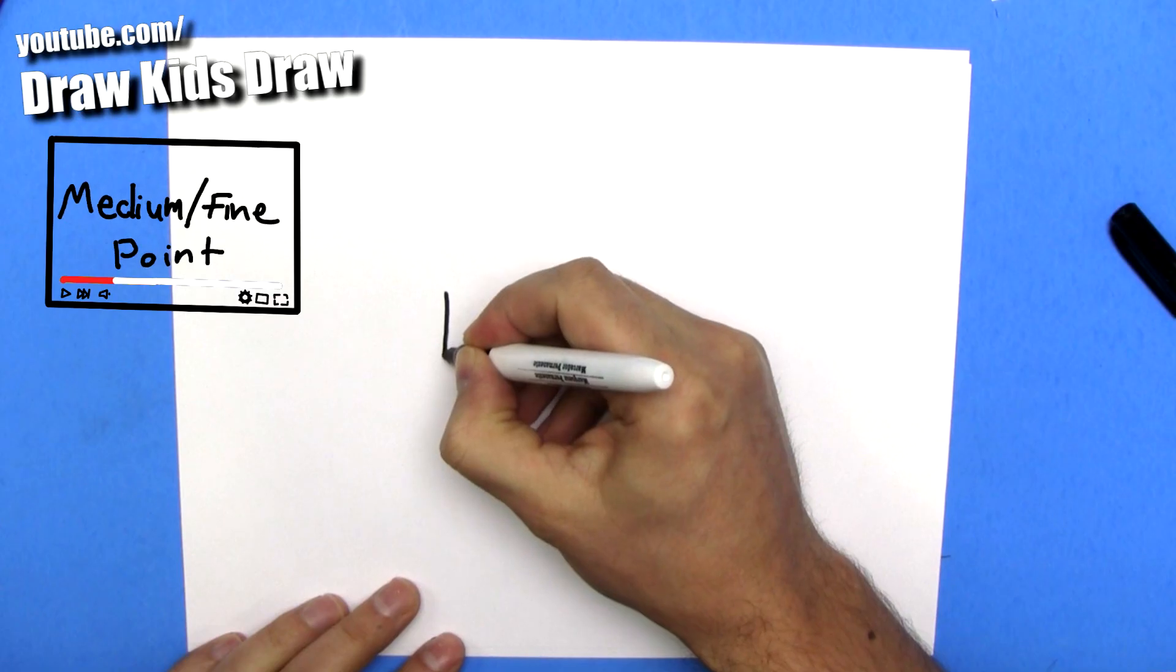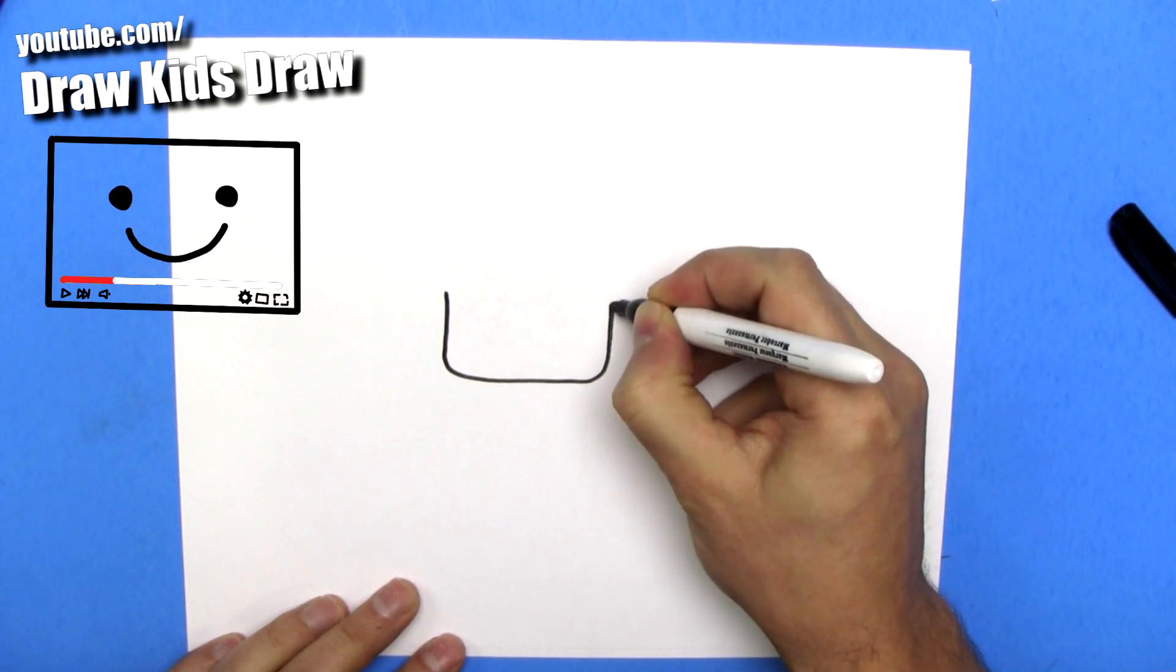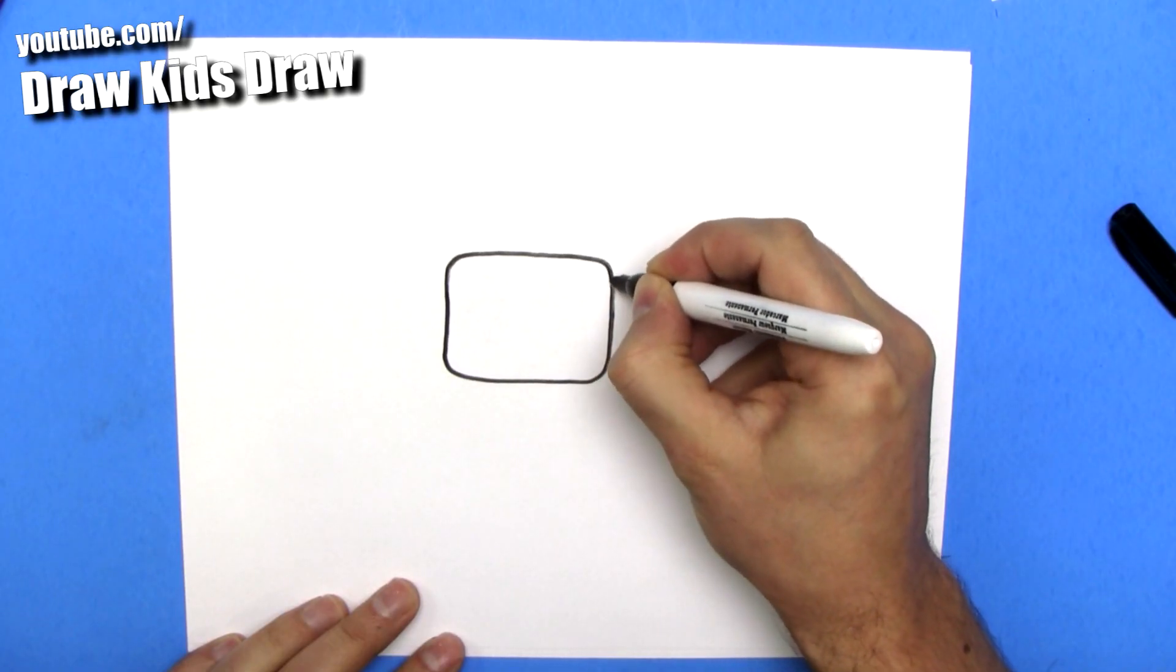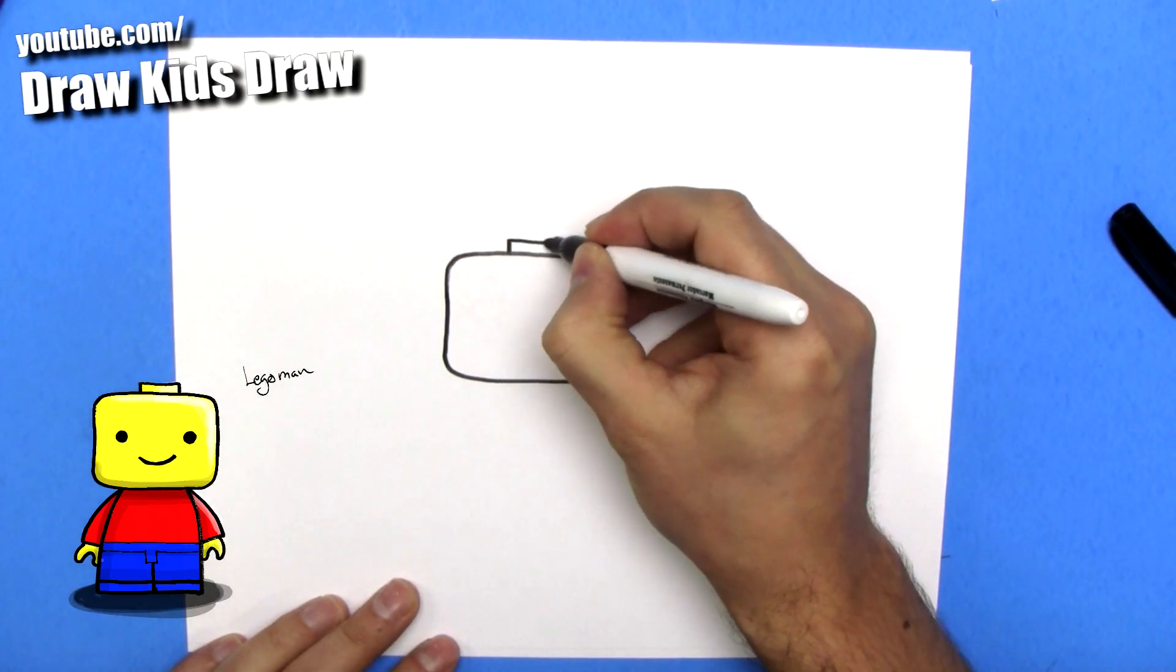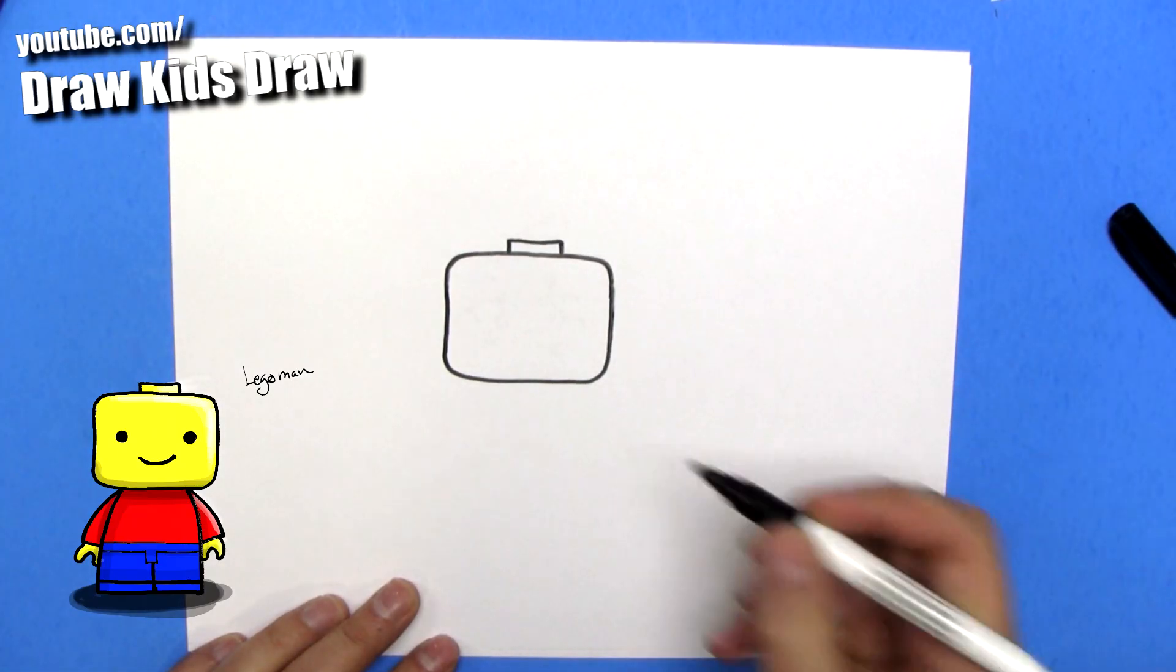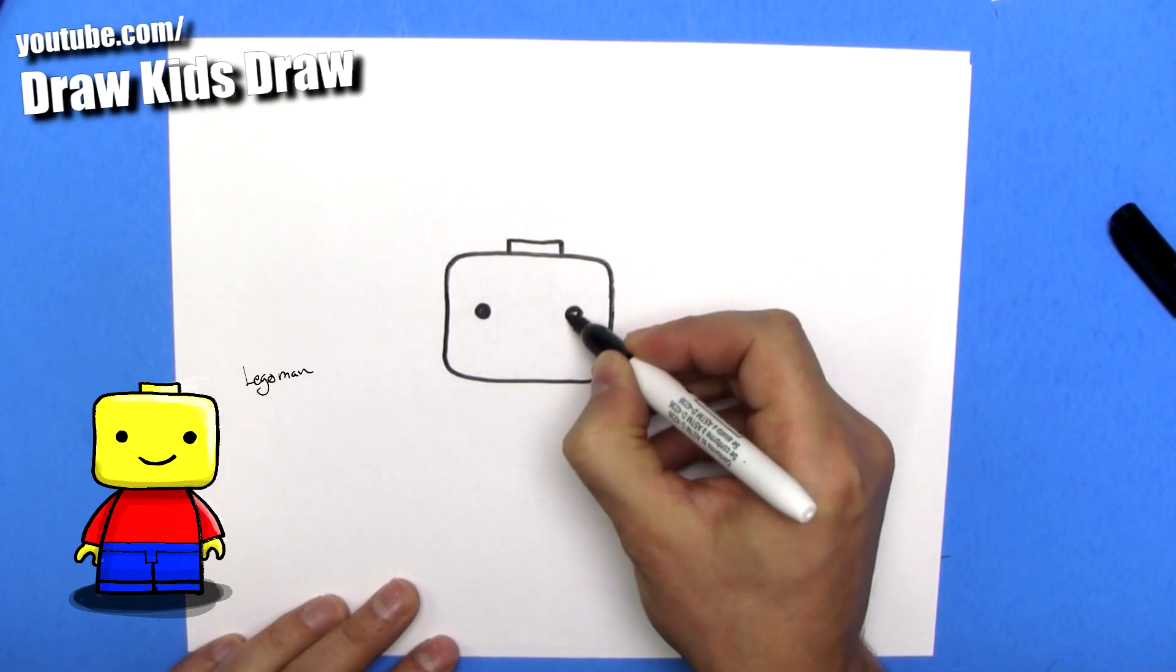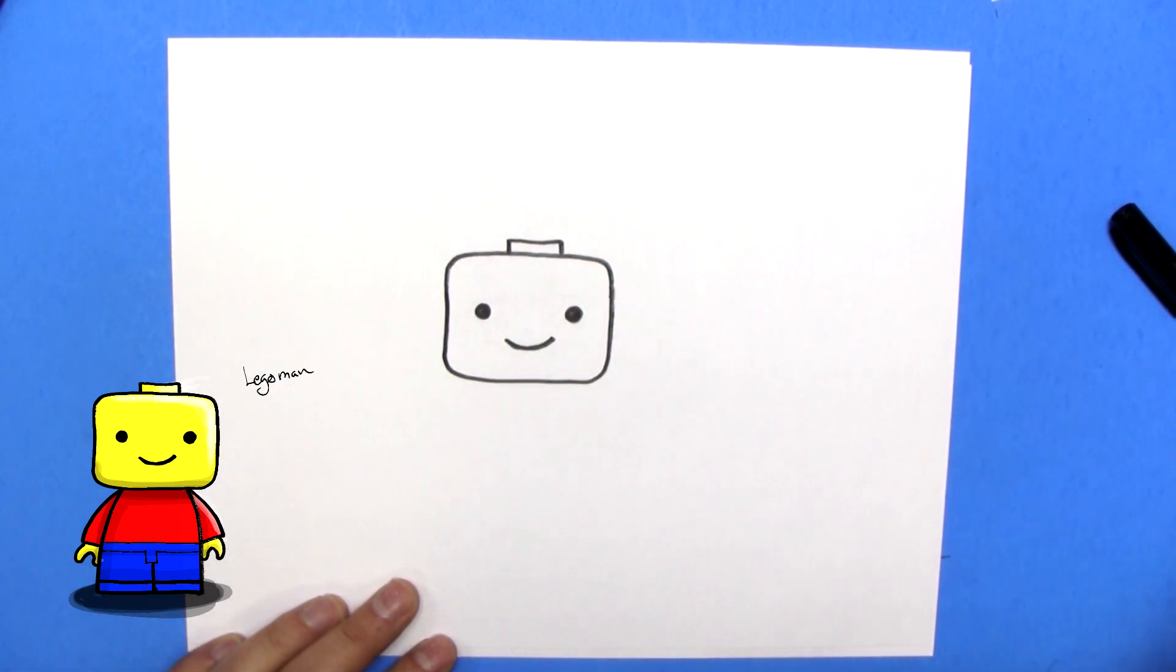We draw kind of a rectangle with curved edges, like this and like this. This is going to be the Lego Man's head. Here's his little Lego top. And we're going to draw two eyes, two eyes and a smile. Aw, Lego Man. Cool.